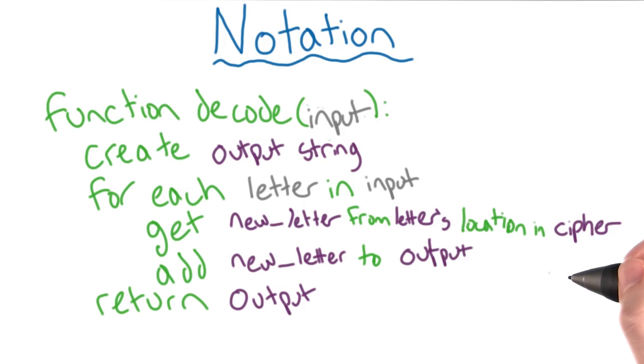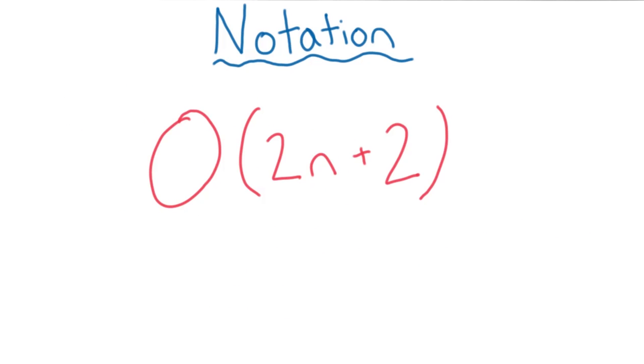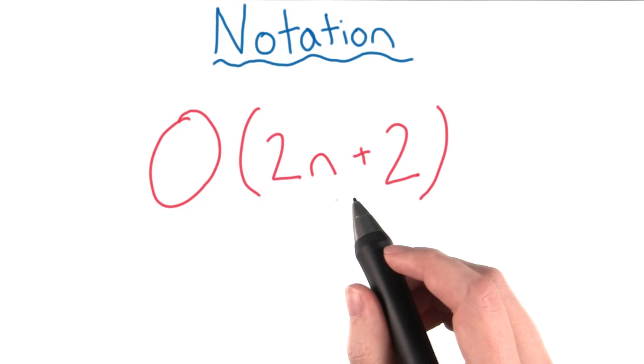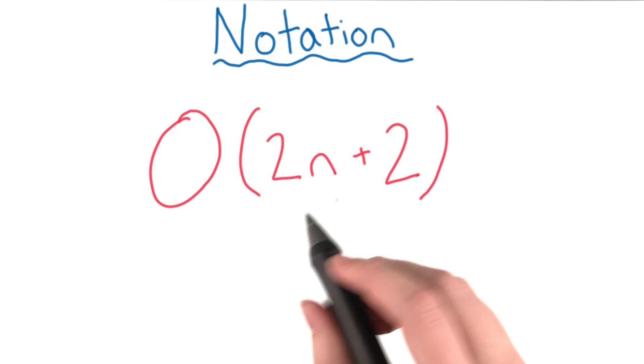Now, both lines inside the for loop have to get run for every letter in the input. For those, we can add a 2n, since n is the number of letters in our input string, and we have two lines that need to get run for each one.